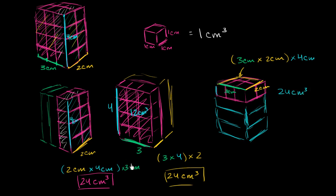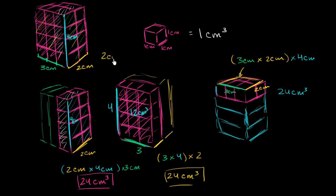It doesn't matter what order you multiply these dimensions in. You can take the area of any face and multiply by the remaining dimension. Whether you do 2 times 4 first then times 3, or 3 times 4 then times 2, or 3 times 2 then times 4 — you always get the same answer. For a rectangular prism with dimensions 2 centimeters wide, 3 centimeters deep, and 4 centimeters tall, the volume is 2 times 4 times 3 equals 24 cubic centimeters.